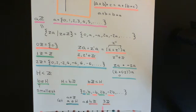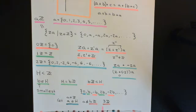However, in infinite group theory that's not the case, and the group of integers under addition is an infinite group. Your intuition is correct for finite groups, which are obviously based on finite sets, but is wrong for infinite groups, which are based on infinite sets.